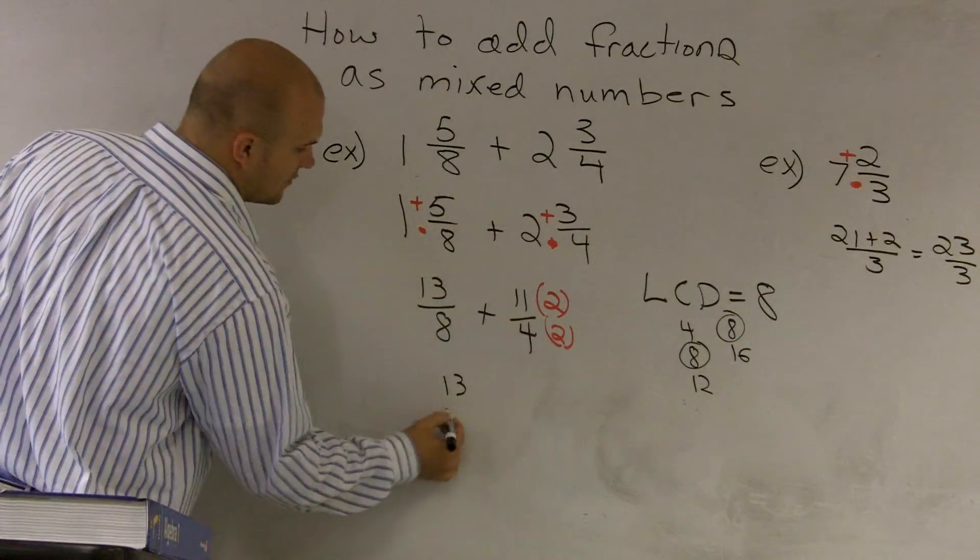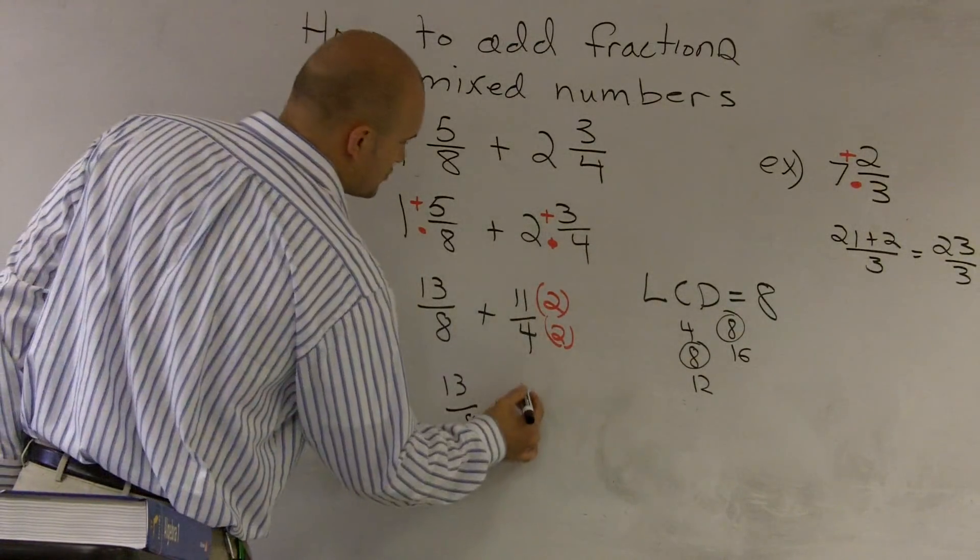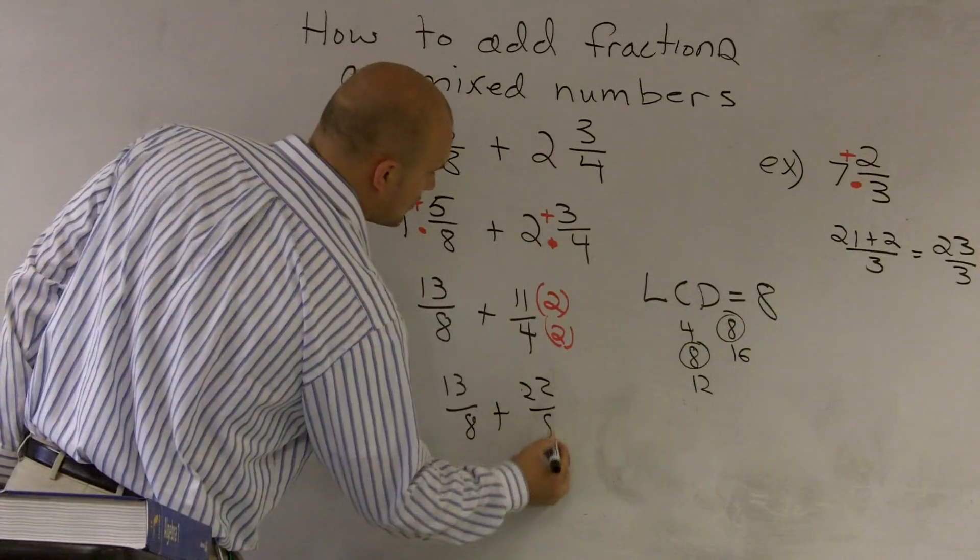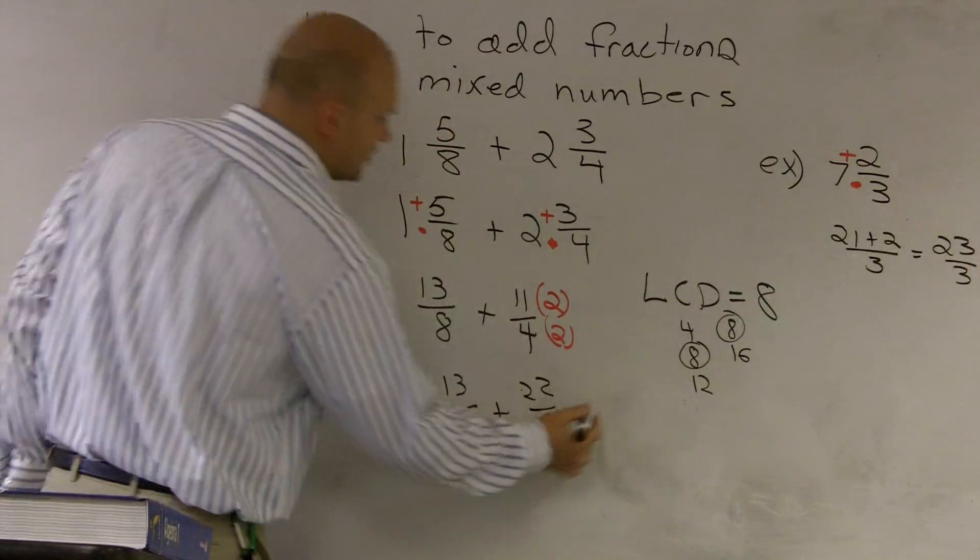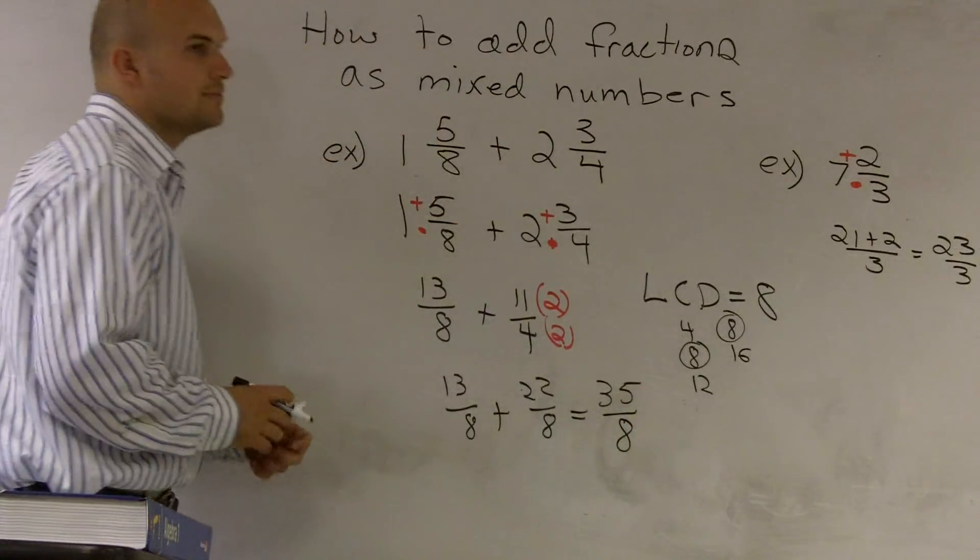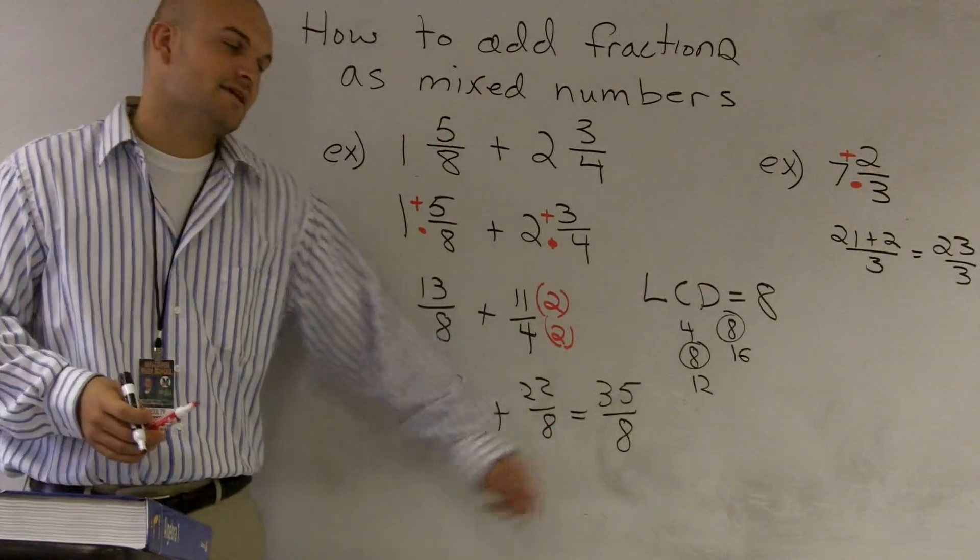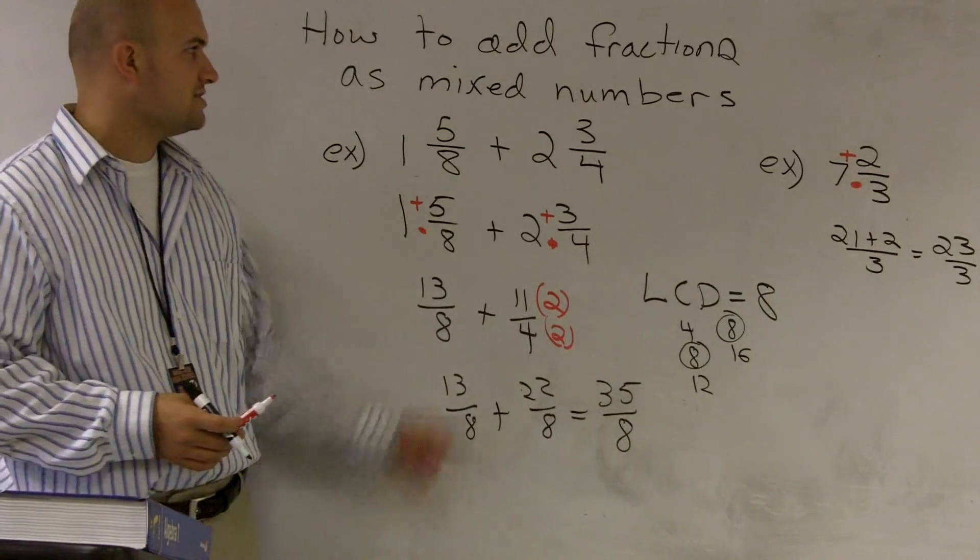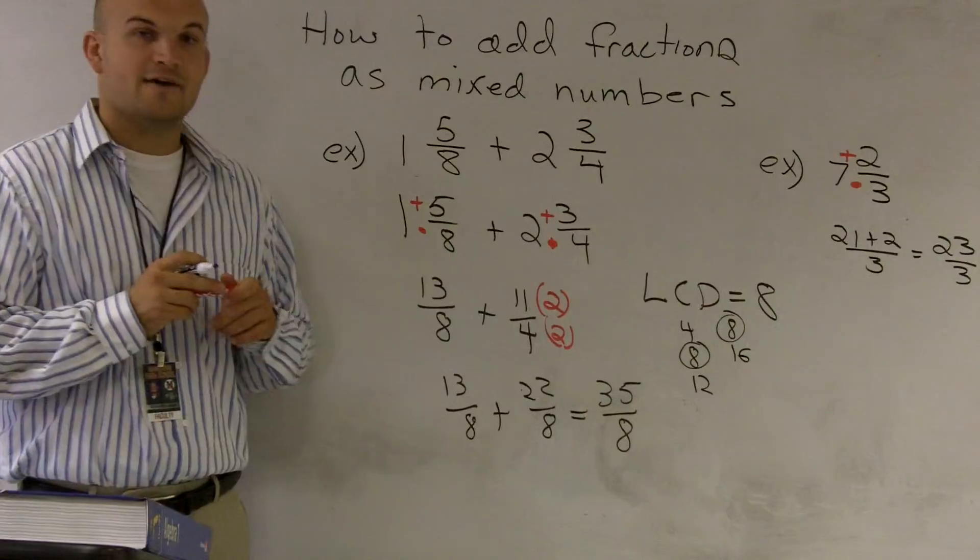And therefore, I get 13 over 8 plus 22 over 8 equals 35 over 8. And I'm going to leave my answer as an improper fraction. And that's how you add fractions when you have mixed numbers.